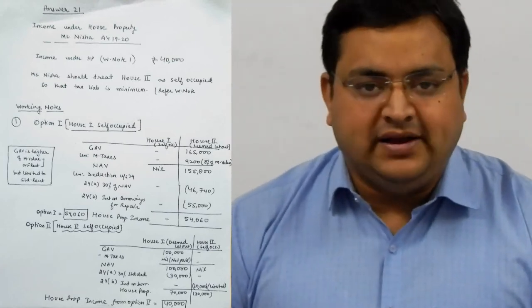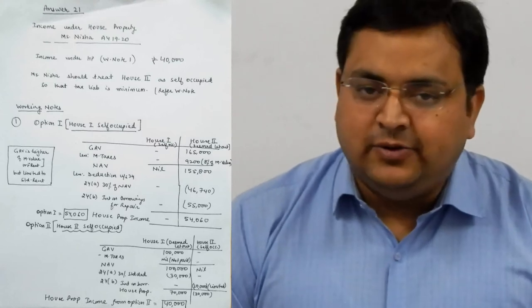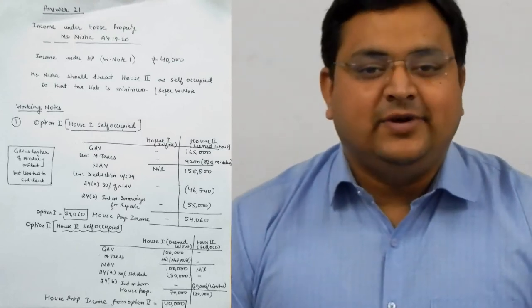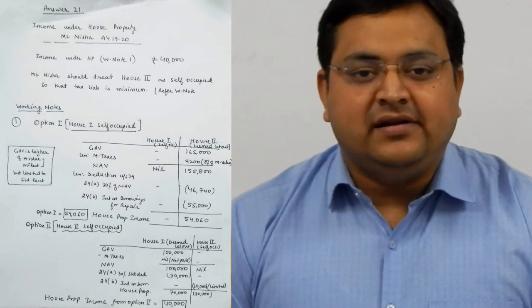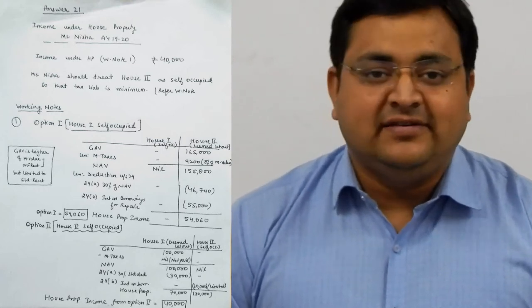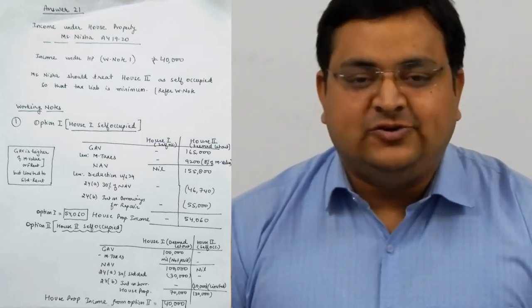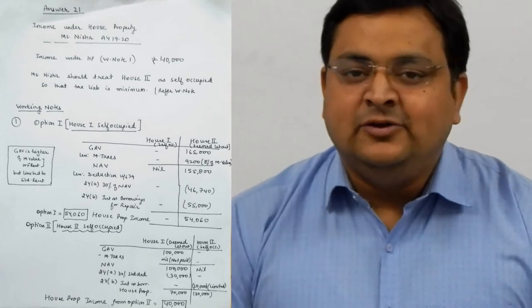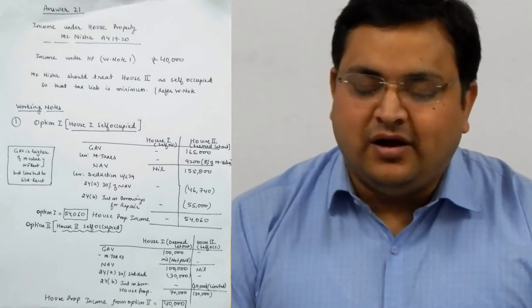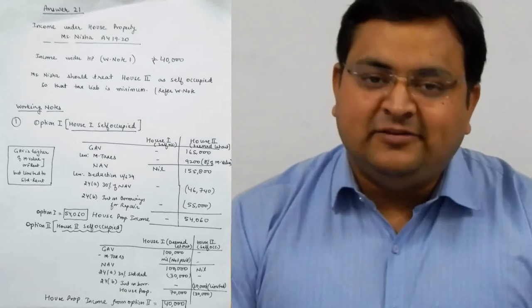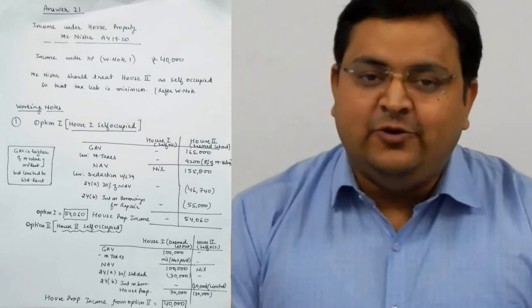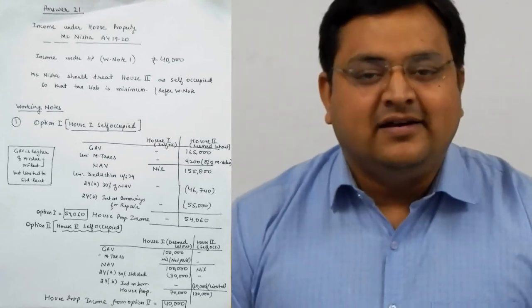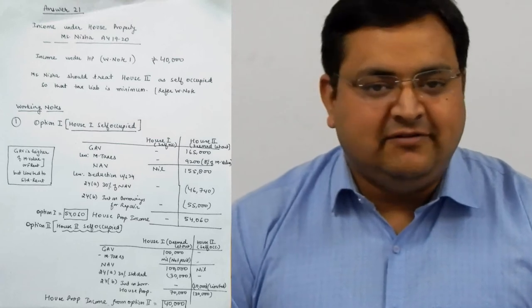House 2 will be deemed let out. First, we will calculate the GAV. How do we calculate GAV? Expected rent and actual rent, whichever is higher. Because the house is not actually let out, expected rent will be GAV. Municipal value or fair rental value, whichever is higher, compared to standard rent, whichever is lower.